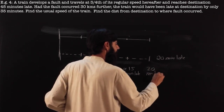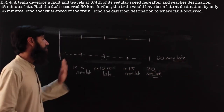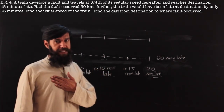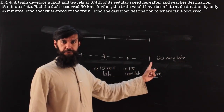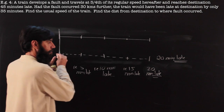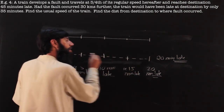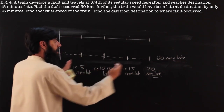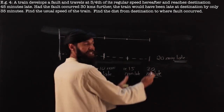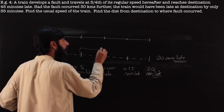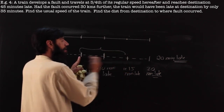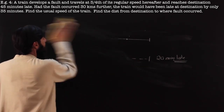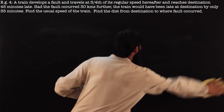The key insight is: even without knowing the actual times, the amount by which I'm late is proportional to the distance covered — because it's the same me, traveling at uniform speed. So the 20 minutes of lateness is proportionally distributed over the entire distance: half the distance means half the lateness, one quarter the distance means one quarter the lateness.